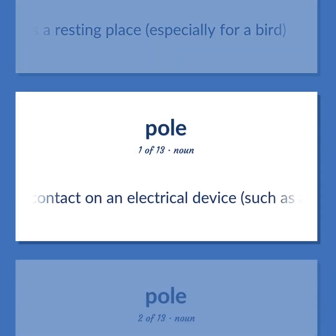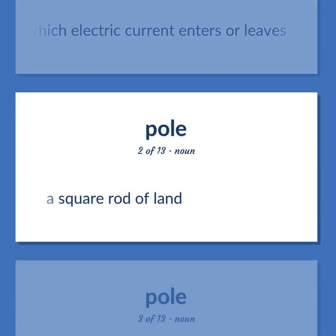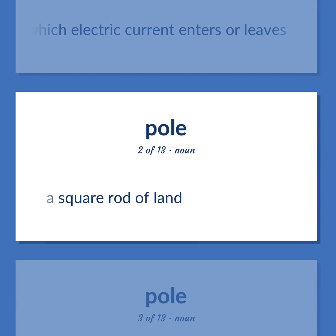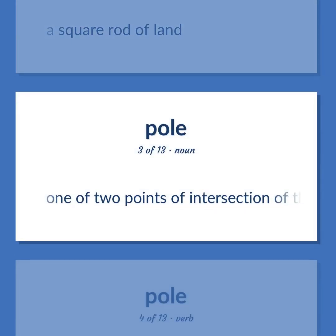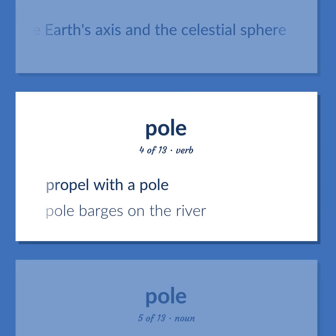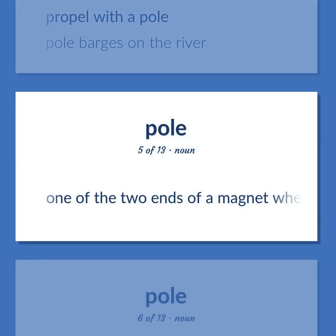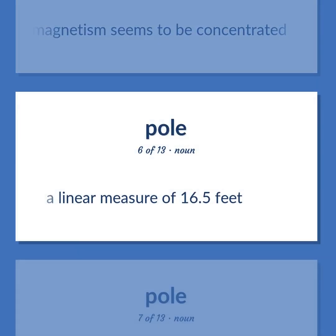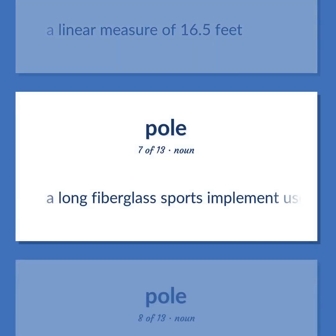A contact on an electrical device, such as a battery, at which electric current enters or leaves. A square rod of land. One of two points of intersection of the Earth's axis and the celestial sphere. Propel with a pole. Pole barges on the river. One of the two ends of a magnet where the magnetism seems to be concentrated. A linear measure of 16.5 feet. A long fiberglass sports implement used for pole vaulting.